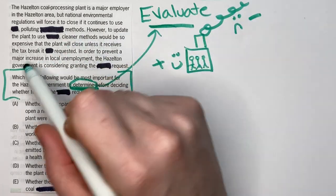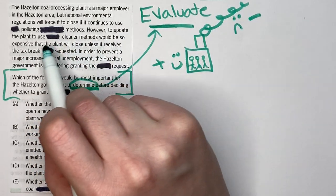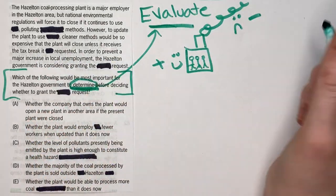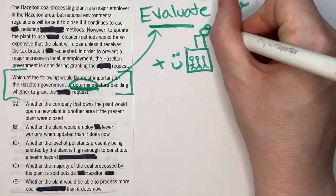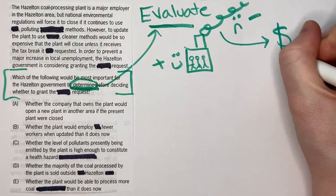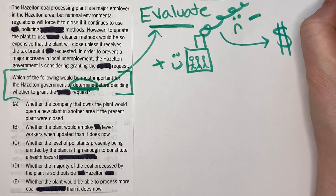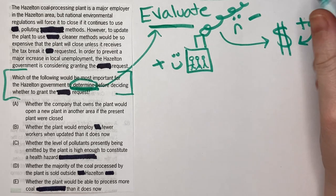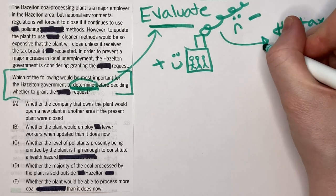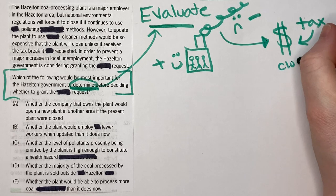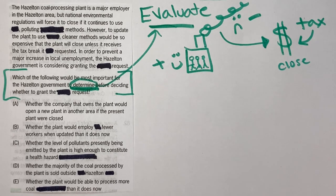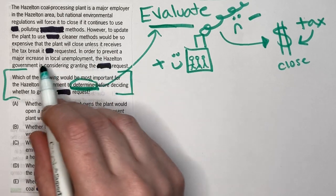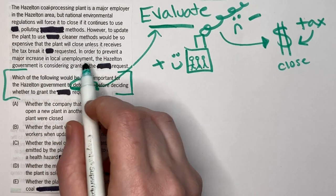However, to update the plant to use cleaner methods would be so expensive that the plant will close unless it receives the tax break it requested. Basically, improving it is going to cost money, so they need a tax break — that's where they're hoping to get the money. If they don't get it, the whole thing is going to close.